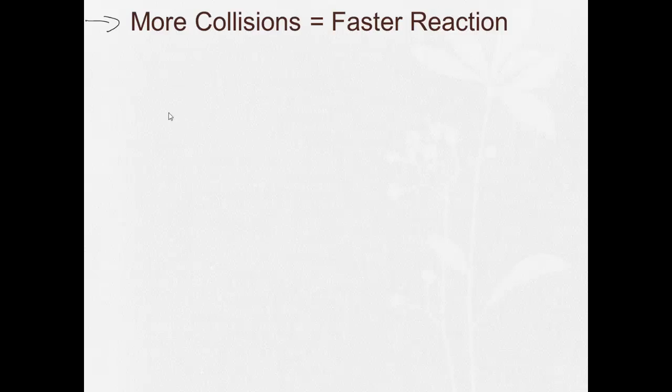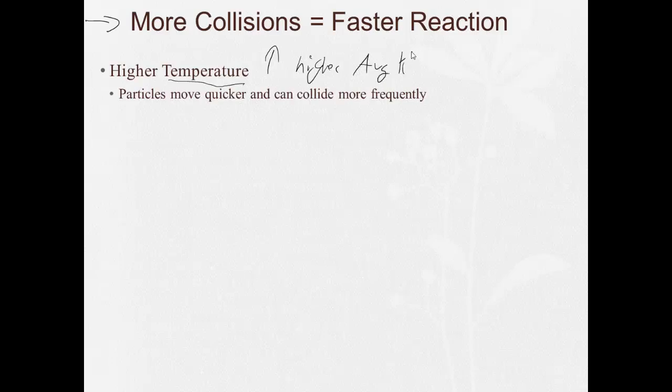So, what are some of these things that are going to cause this? One, a higher temperature. This you kind of know, right? When higher temperature, particles move faster or quicker, and they can collide more frequently. We've learned that temperature is related to the average kinetic energy. So, the higher the temperature, the higher the average kinetic energy, the faster they're moving.